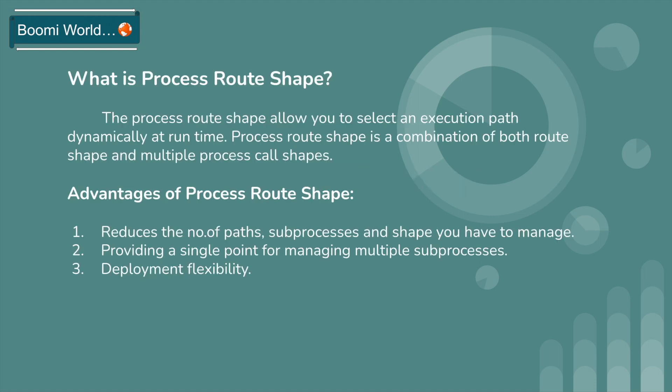First we look into what is Process Route Shape and the advantages of Process Route Shape. The Process Route Shape allows you to select an execution path dynamically at runtime. Usually, Process Route Shape is a combination of both Route Shape and multiple Process Call shapes. So instead of using Route Shape and multiple Process Call shapes, you can use Process Route Shape.